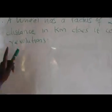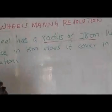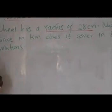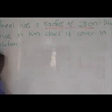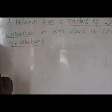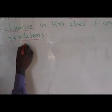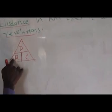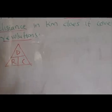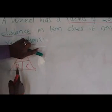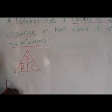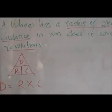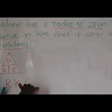Question number two. A wheel has a radius of 28 centimeters. What distance in kilometers does it cover in 500 revolutions? Draw the triangle and write Democratic Republic of Congo: distance, revolution, circumference. The question asks what distance, so cover distance and you remain with R times C. Distance equals R times C — revolutions times circumference.